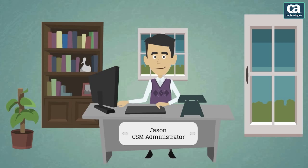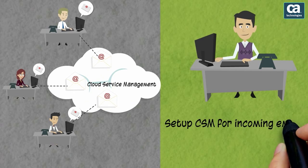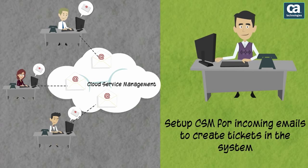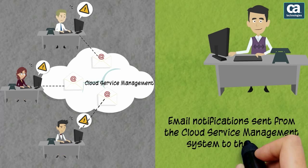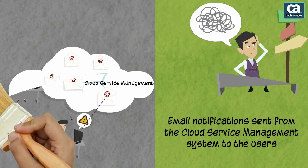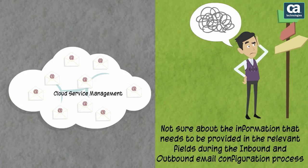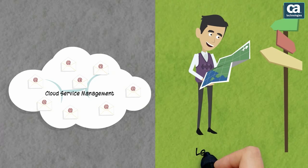Jason is a CSM administrator. He wants to set up cloud service management for incoming emails to create tickets in the system. He would also like to have email notifications sent from the cloud service management system to the users. Jason is not sure about the information that needs to be provided in the relevant fields during the inbound and outbound email configuration process. Let's go ahead and see how Jason can do this.